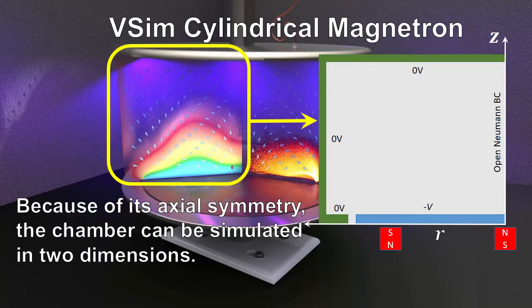The magnetron is symmetric around the vertical center axis. The horizontal axis is the radius R. The open Neumann boundary condition on the right side of the simulation domain corresponds to the center of the magnetron chamber.